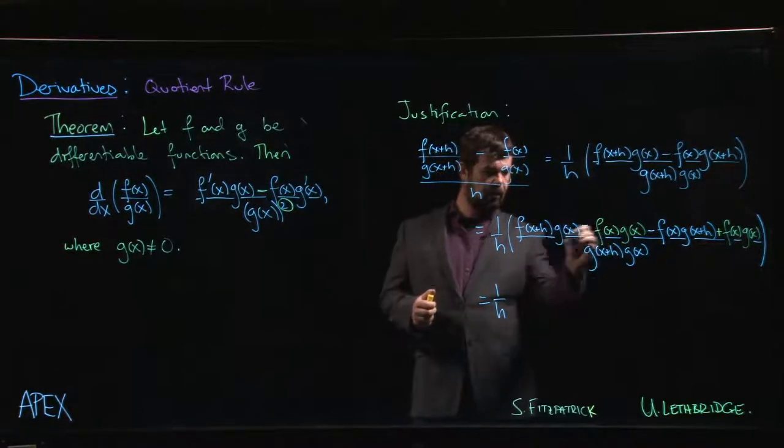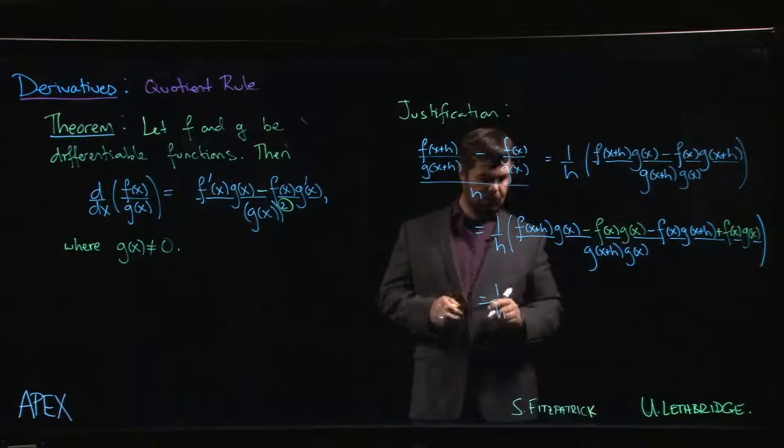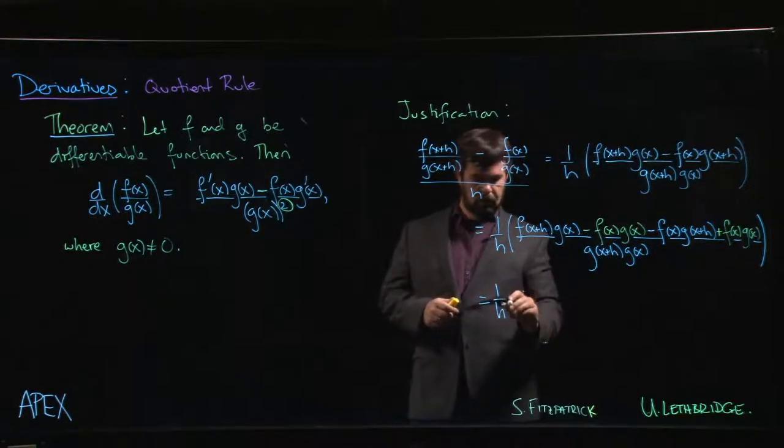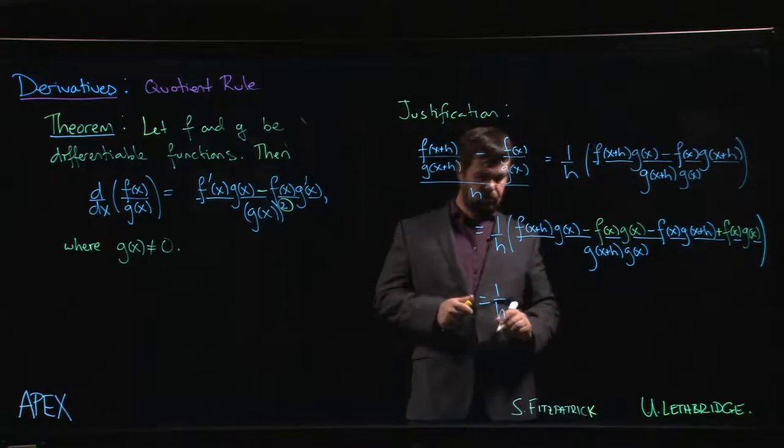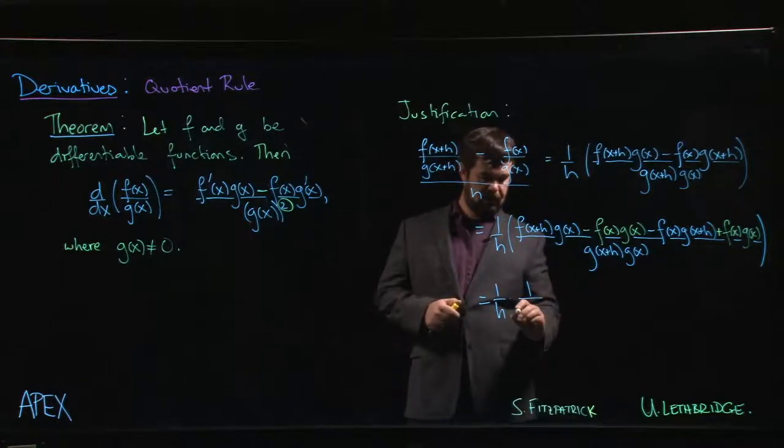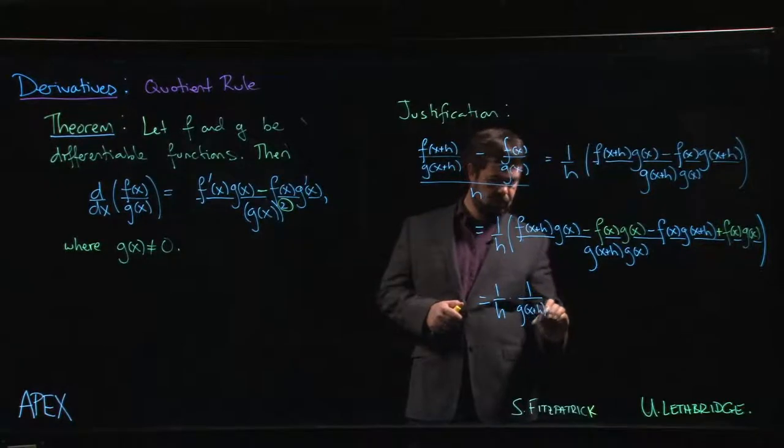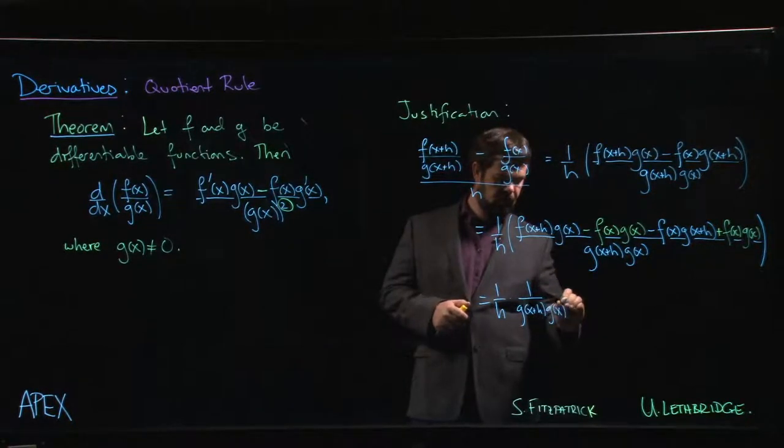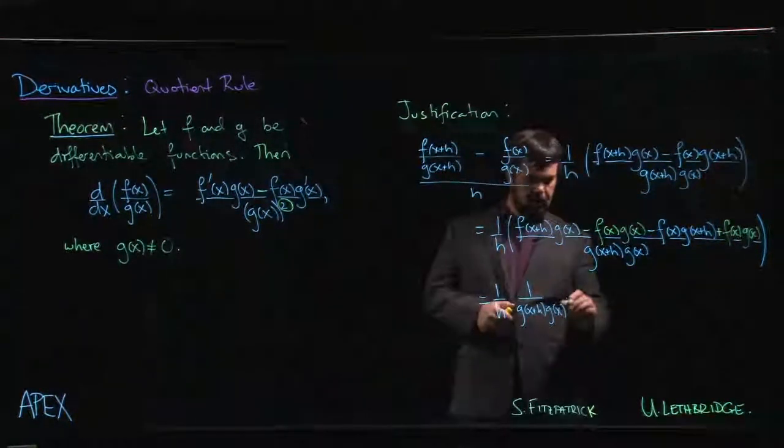Here I'm going to factor out a g of x from the first one. So we're going to have 1 over h times - well let's even leave it like this - g of x plus h times g of x. Let's leave those denominators out there, times